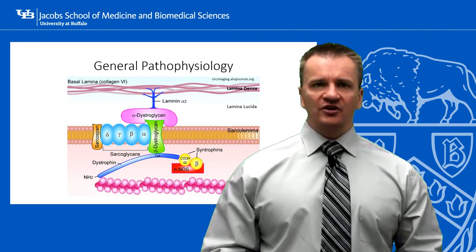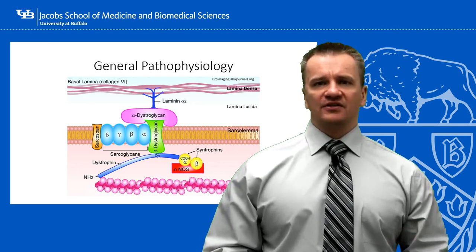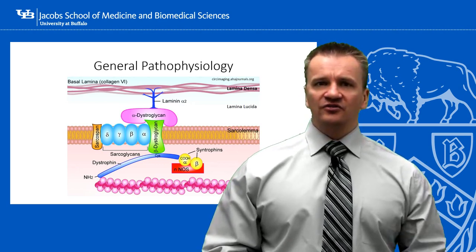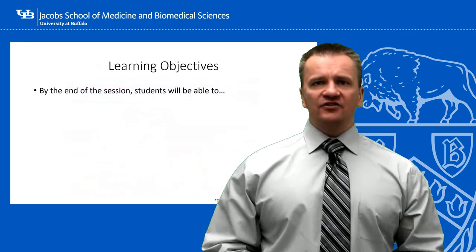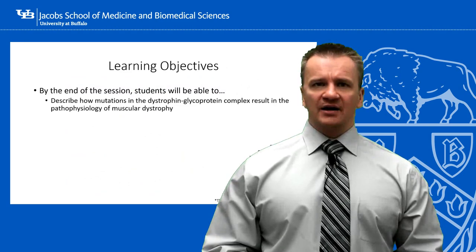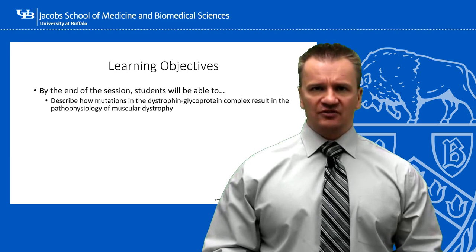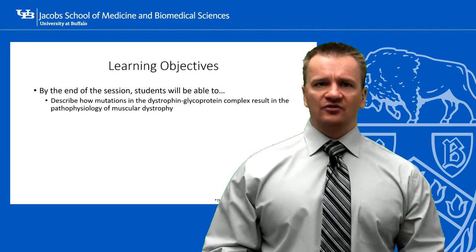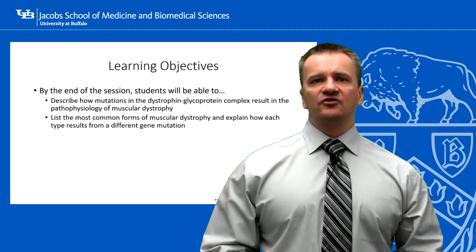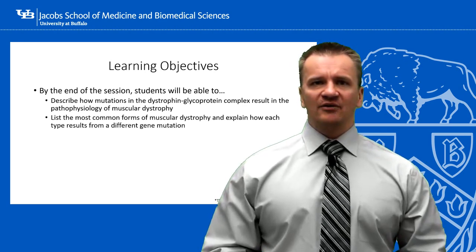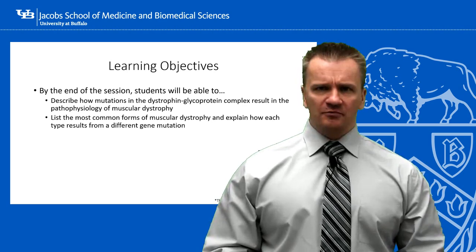Although in recent years, some gene mutations to proteins outside of the complex have been included in this classification system due to similarities in the pathophysiology of the disease. In this first segment, we are going to describe the general pathophysiology of muscular dystrophies in relation to gene mutations affecting the dystrophin-associated glycoprotein complex. We will also briefly introduce the various muscular dystrophies and explain how different gene mutations are responsible for different forms of muscular dystrophy.